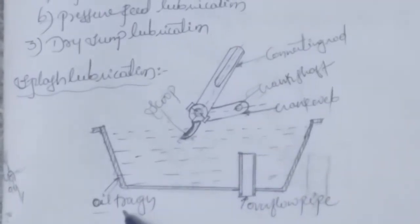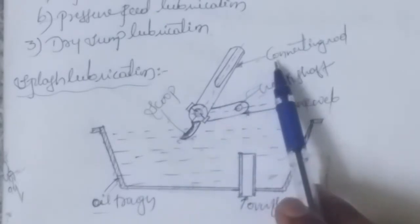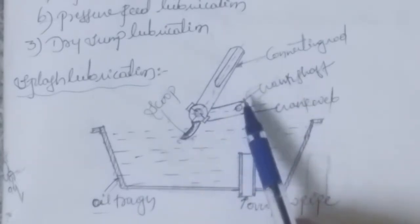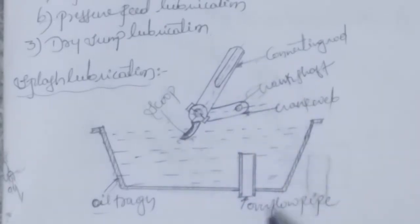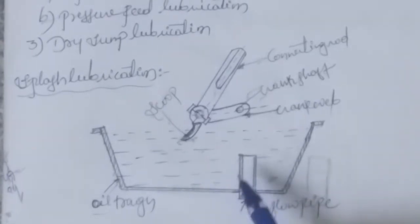First of all, see the parts of the splash lubrication system: oil trough, scoop, connecting rod, crankshaft, crank web, and overflow pipe.